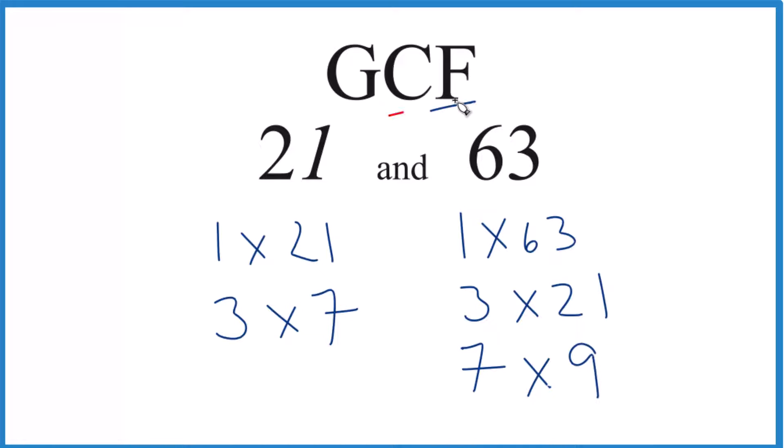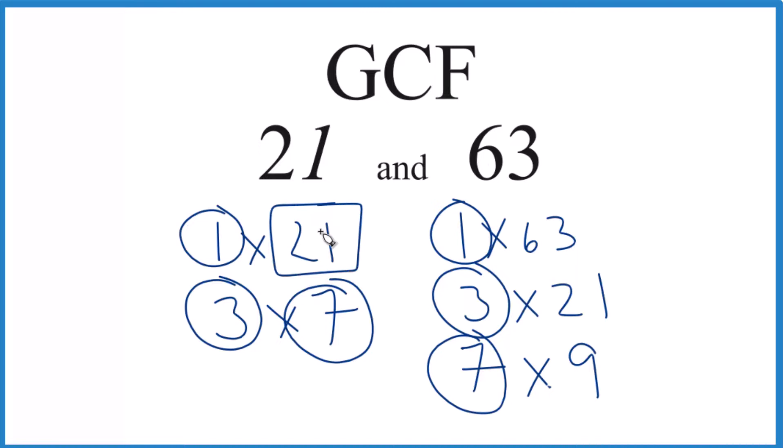We have the factors. Let's see what's in common here. 1 goes into 21 and 63, that's a common factor. 3 is also in common between 21 and 63. 7, yes. But the greatest common factor is 21 itself.